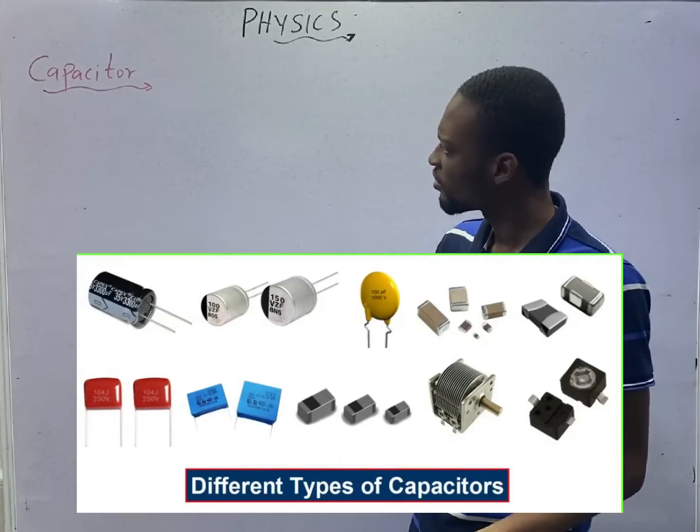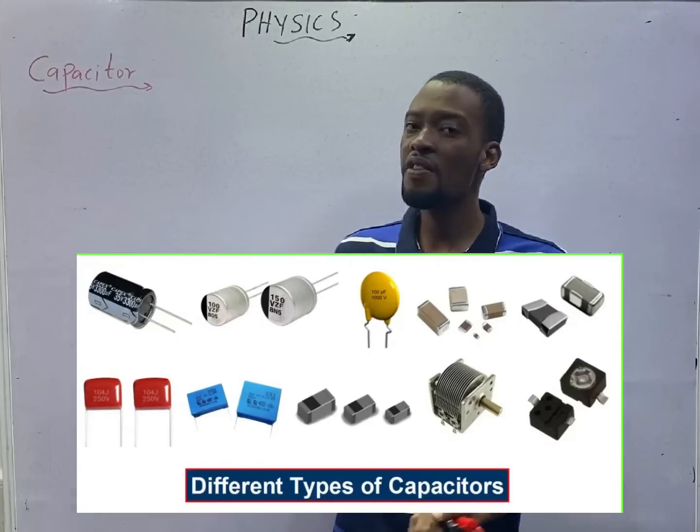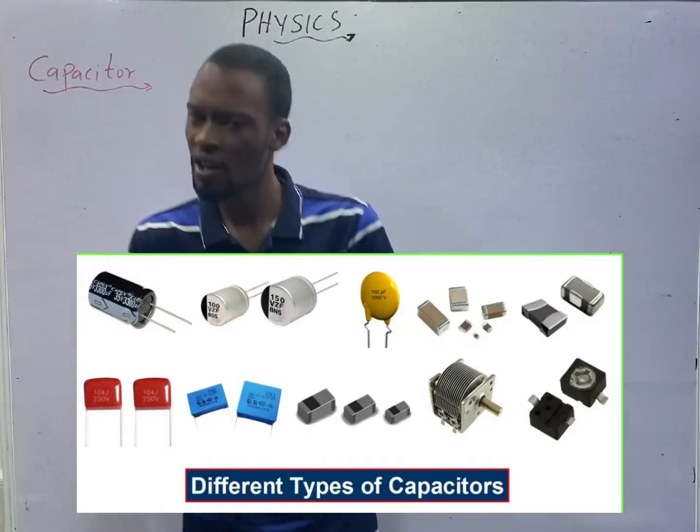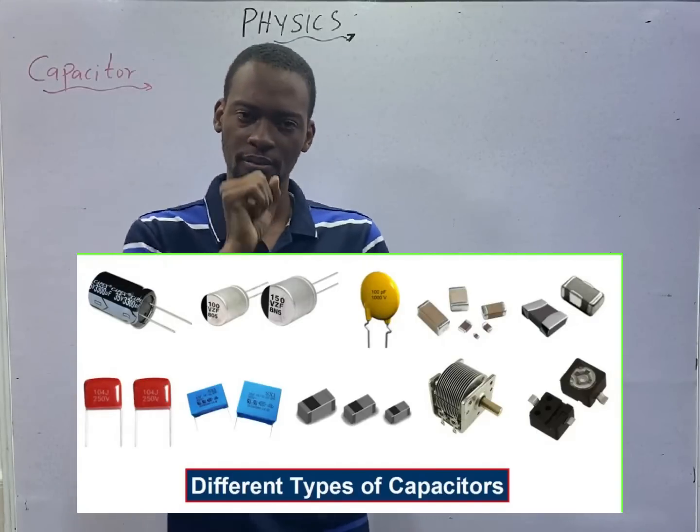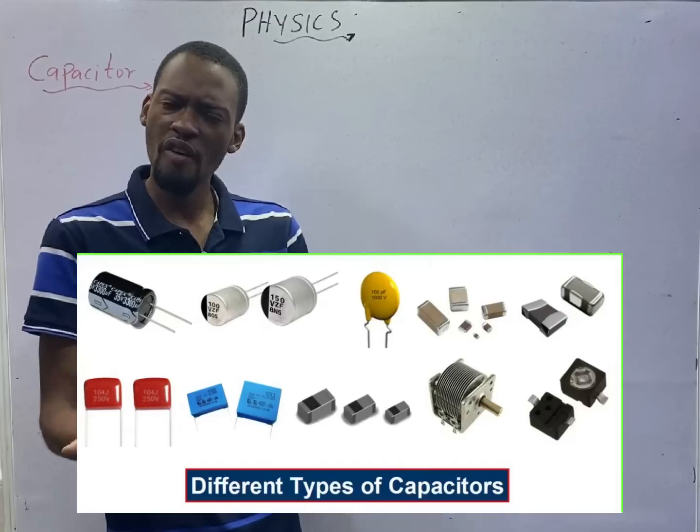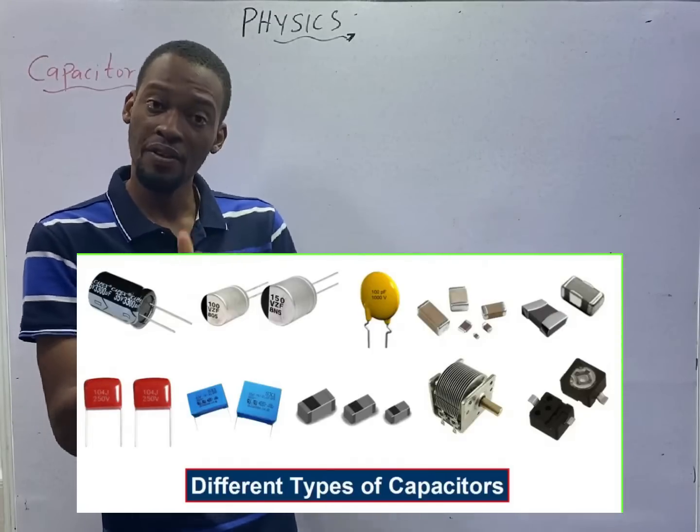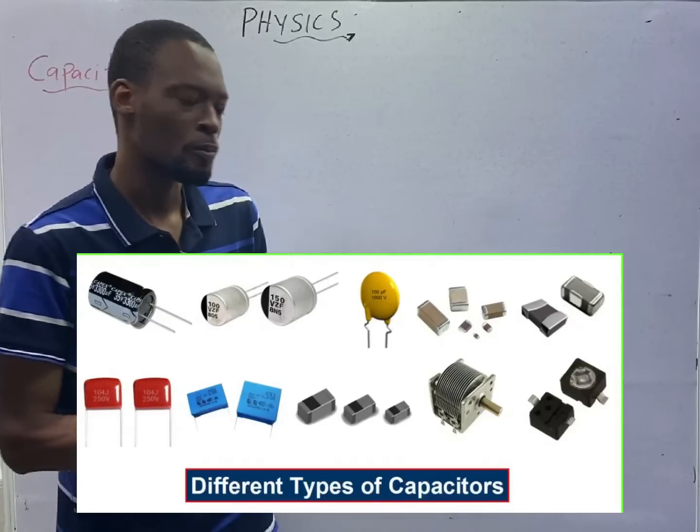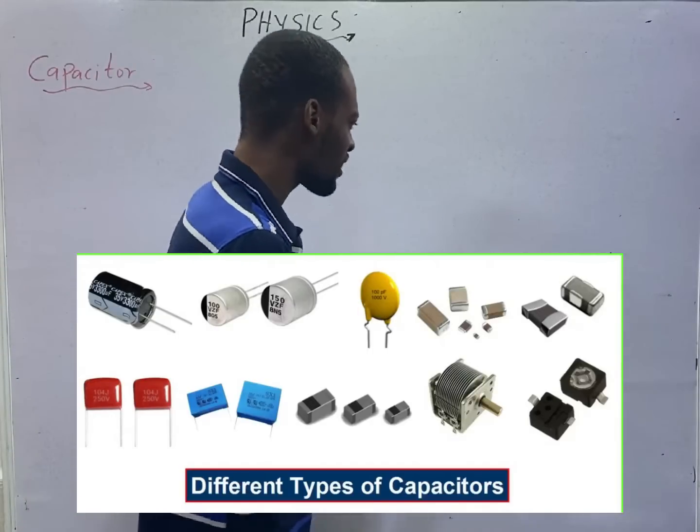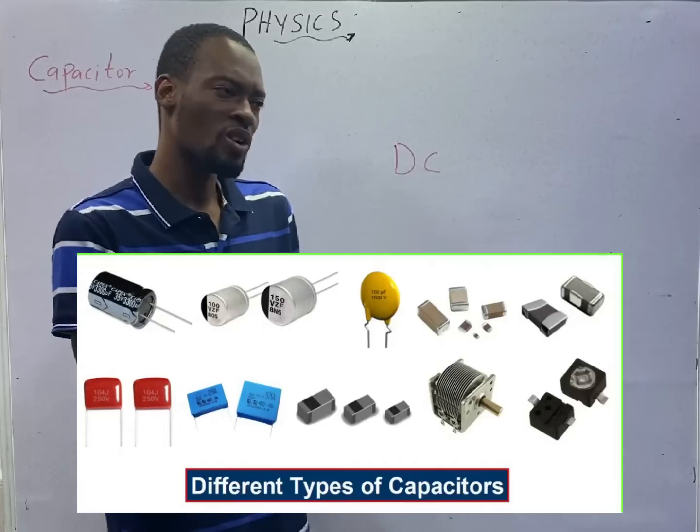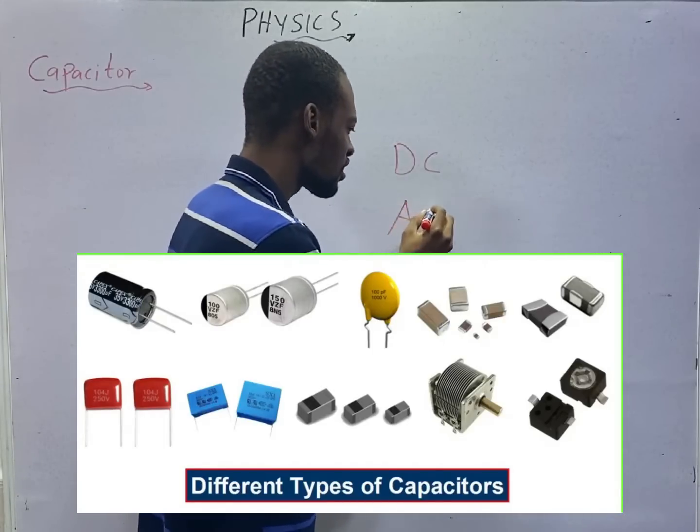Capacitor is a device used to store electrical charge. Remember, when you are dealing with current, we have the direct current and we have the alternating current. The direct current is simply DC and alternating current is AC.